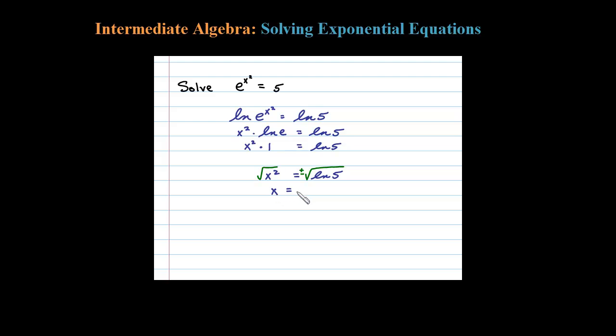Both solutions should be good because, look here, when we plug it back into the original, plus or minus will be squared away to plus. And then e to the natural log of 5 is 5, so they both work. Two solutions.